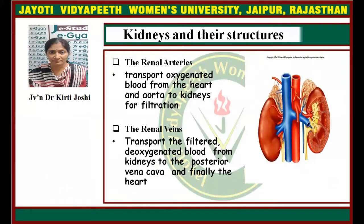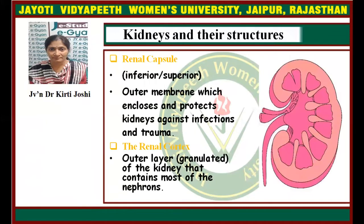Now, kidney structures. The renal artery transports oxygenated blood from the heart and aorta to the kidneys for filtration. The renal veins transport the filtered deoxygenated blood from kidneys to the posterior vena cava and the heart. The renal capsule is the inferior and superior outer membrane which encloses and protects the kidney against infection and tumors. The renal cortex is the outer granulated layer of the kidney that contains most of the nephrons.